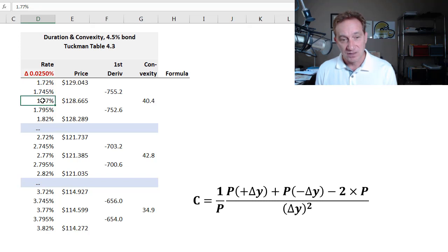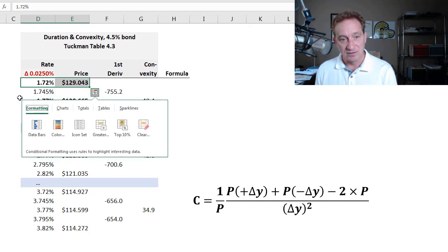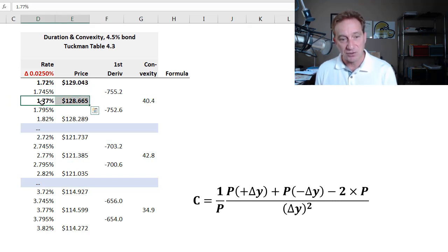So you can see we have here really three panels in that exhibit, and here this bond has a price of $128.665 when the rate is 1.77 percent, and then if we go lower the rate here by, you can see that's two notches or five basis points, then the price goes up, and if we increase the rate by five basis points, price goes down.